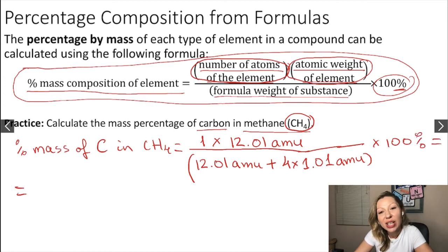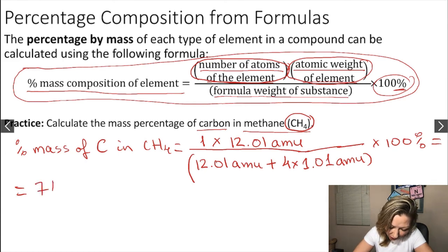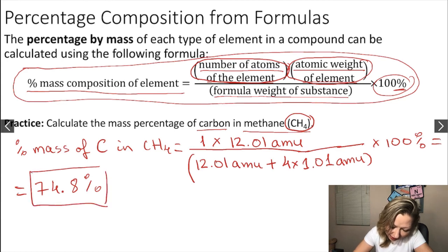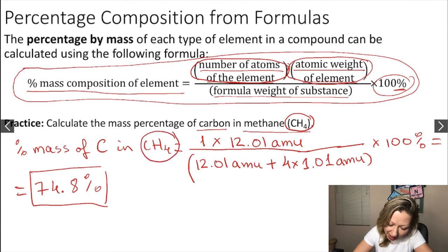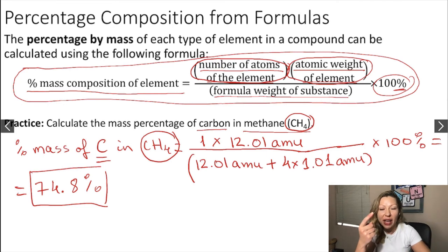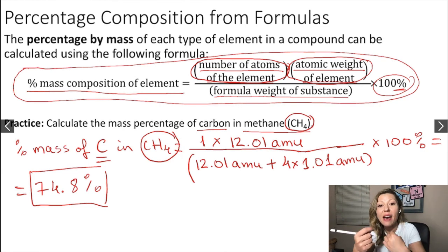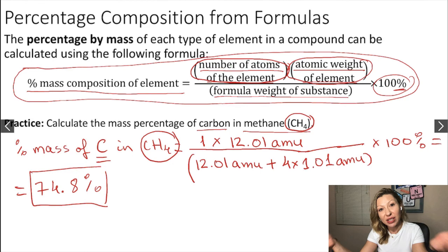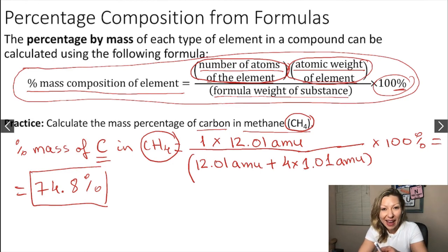If you do this calculation, you arrive at 74.8%. This means that 74.8% of CH₄ is actually carbon. Why is that? You only have one carbon atom and four hydrogen atoms, but carbon is significantly heavier than hydrogen. So overall, close to 75% of CH₄ is carbon.